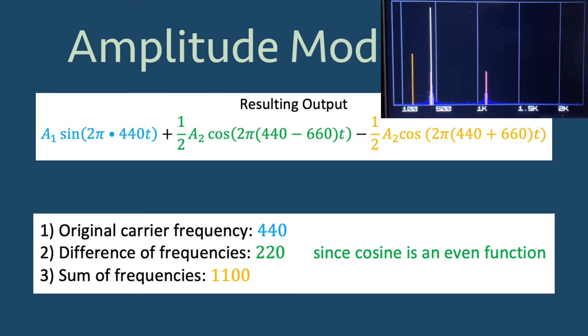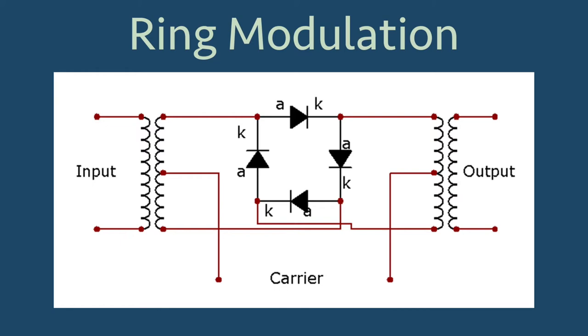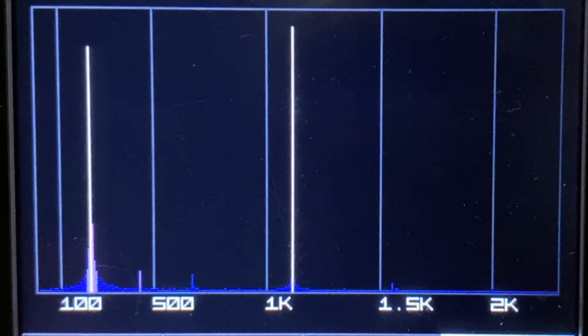What a ring modulator circuit does is give an output that does not include the original carrier frequency, so only the sum and difference frequencies are represented. It is named ring modulator since the circuit design involves a ring of diodes. Here is the ring modulated output of our original two sine waves, 440 and 660 Hz.